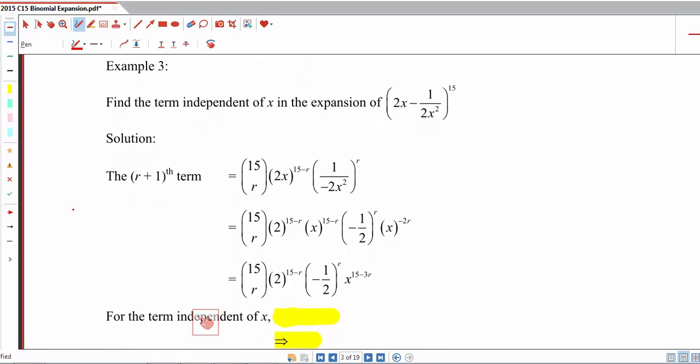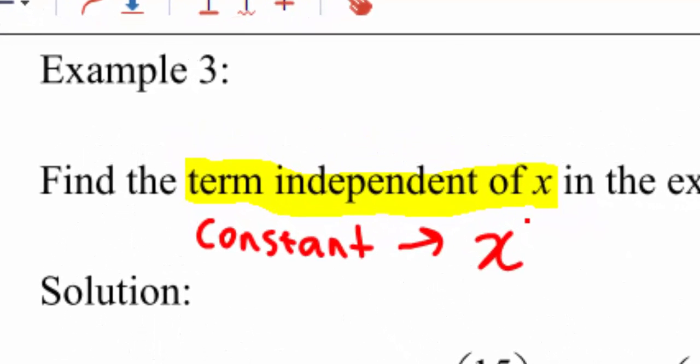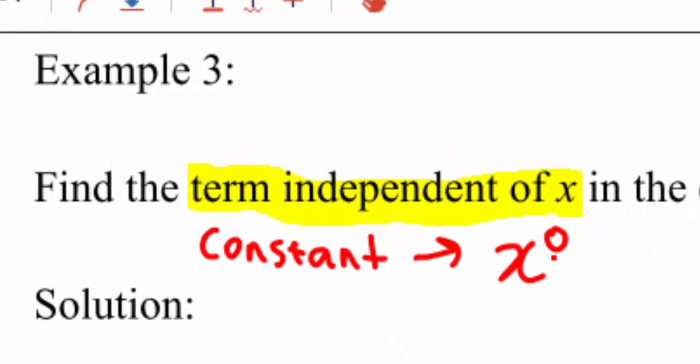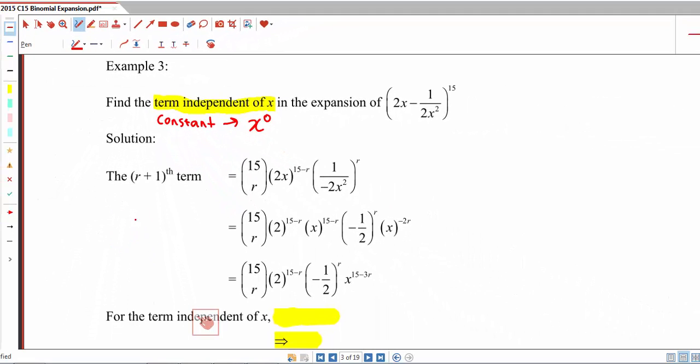Find the term independent of x in the expansion of this. Now, term independent of x here will mean that this is the constant term in our binomial expansion, also when x is to the power of 0. So just as before, we will find out what the general term is, where 2x is a and negative 1 over 2x squared is b.